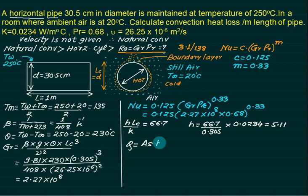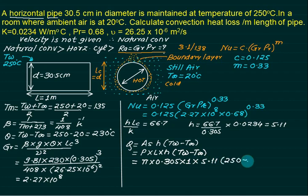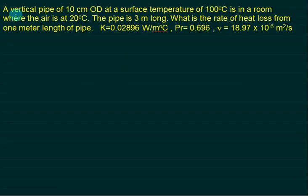Note that h = 5.11 W/m²K is very small compared to forced convection because the fluid moves at very low velocity. Heat transfer Q = As × h × (Tw − T∞) = π × D × L × h × (Tw − T∞) = π × 0.305 × 1 × 5.11 × (250 − 20) = 1127.8 W per meter length.